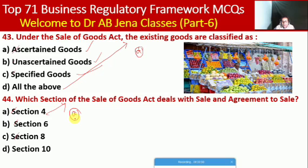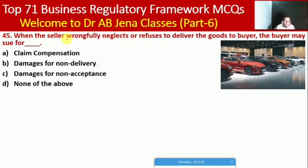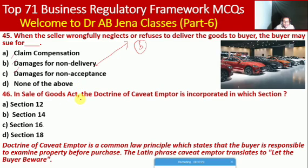Next MCQ: when the seller wrongfully neglects or refuses to deliver goods to the buyer, the buyer may sue for what? Whether claim for compensation, damages for non-delivery, damages for non-acceptance, or none of these. Here B is the right option — damages for non-delivery. Next MCQ: in the Sale of Goods Act, the doctrine of caveat emptor is incorporated in which section? Whether Section 12, 14, 16, or 18. Here C is the right option — Section 16.